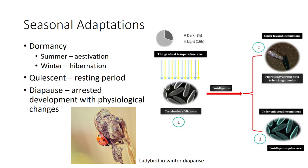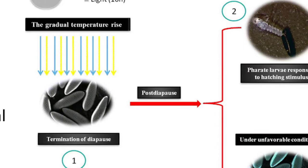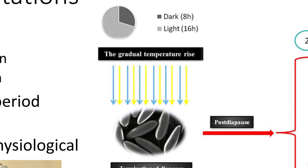Dormancy occurs particularly in temperate areas when environmental conditions become unsuitable, such as in seasonal extremes of high or low temperatures or drought. It may occur in summer, called estivation, or winter hibernation, and may involve quiescence or diapause. Quiescence is halted or slowed development as a direct response to unfavorable conditions, with development resuming immediately when favorable conditions return. In contrast, diapause involves arrested development combined with adaptive physiological changes, with development not necessarily returning with suitable conditions but only following particular physiological stimuli. In this figure, you can see the factors involved in the termination of diapause, including photoperiod and temperature.